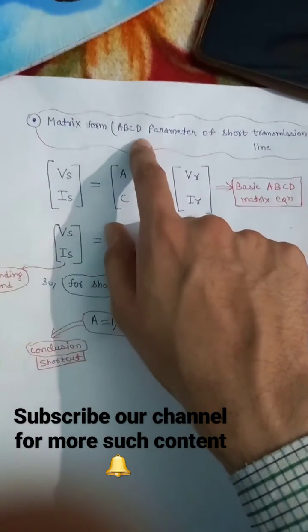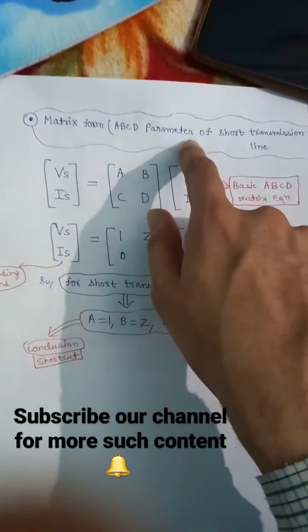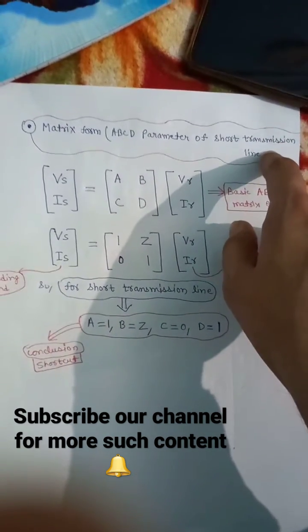Hello friends, here we quickly discuss a shortcut method to find the ABCD parameter of short transmission line without doing any calculation.